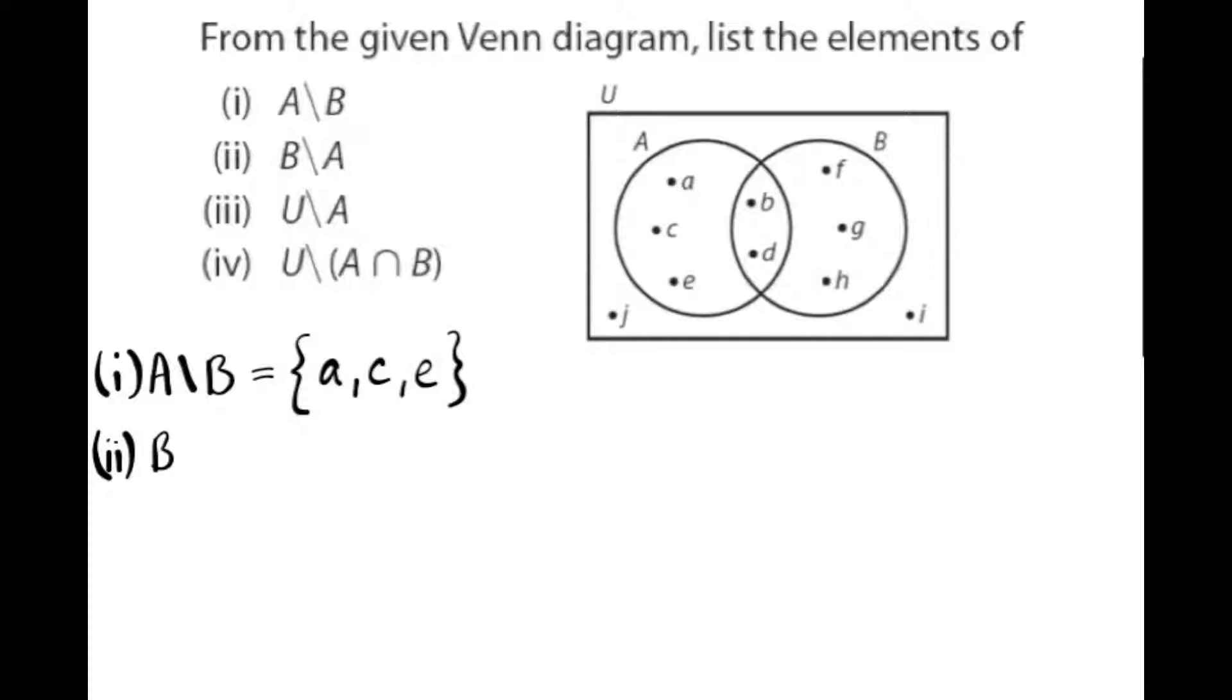Second question, B not A or B less A. These are the things that are in B but are not in A. So I'm shading this in yellow. That's f, g, and h.